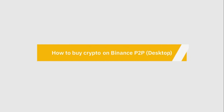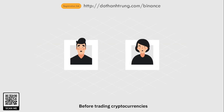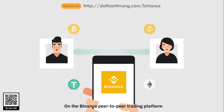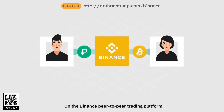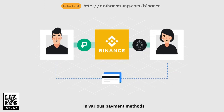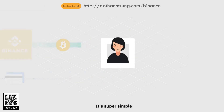How to Buy Cryptocurrency on Binance P2P. Before trading cryptocurrencies, you need to buy cryptocurrencies first. On the Binance Peer-to-Peer Trading Platform, you can buy cryptocurrencies using multiple fiat currencies in various payment methods. It's super simple.